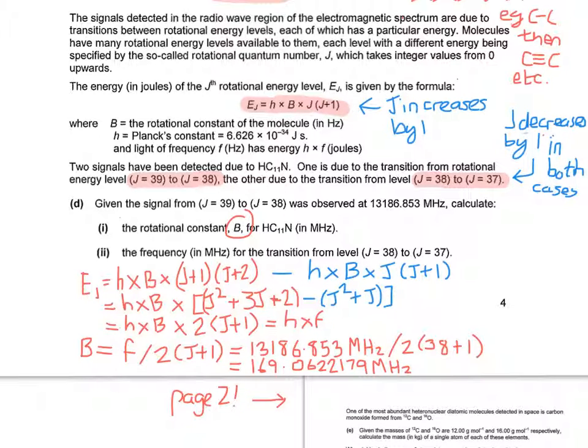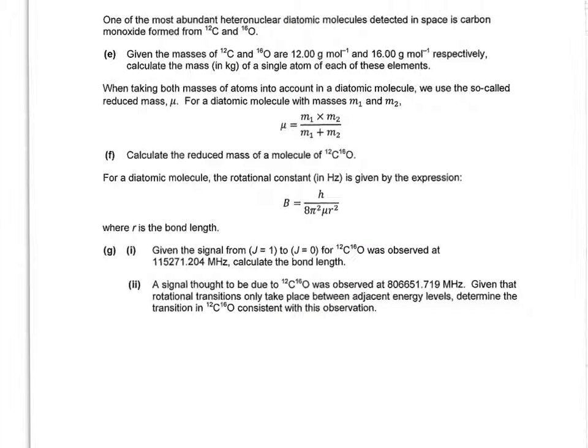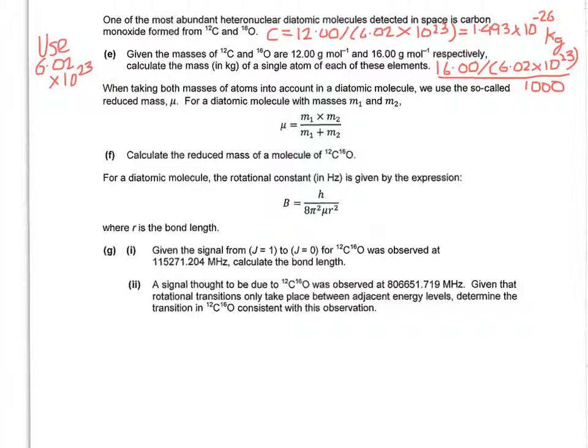One of the most abundant heteronuclear diatomic molecules detected in space is carbon monoxide, formed from 12C and 16O. It gives you the masses in grams per mole, so that's relative formula mass. Calculate the mass in kilogram of a single atom of each of these elements. You need to use Avogadro's number. So you divide the mass in grams per mole by that number, which gives us 1.993 × 10^-23 grams. But they want it in kilograms, so you divide that by 1,000. Doing the same thing for oxygen, that will give you 2.658 × 10^-26 kilograms.